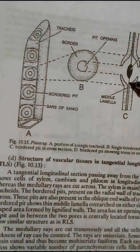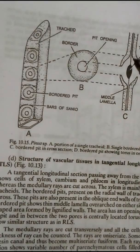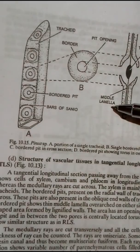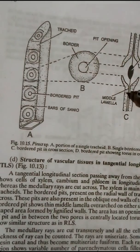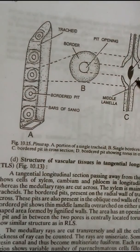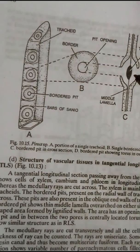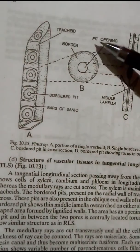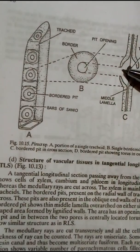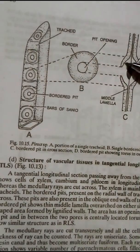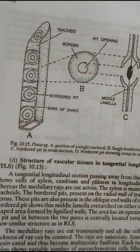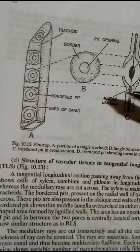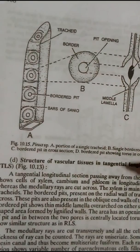Each bordered pit shows a thin middle lamella — you can see it in the middle here. The middle lamella is overarched on either side by a dome-shaped area formed by the lignified walls. This area has an opening — the pit opening — on each side. In between the two pores, there is a centrally located torus, with the middle lamella on both sides of the torus.